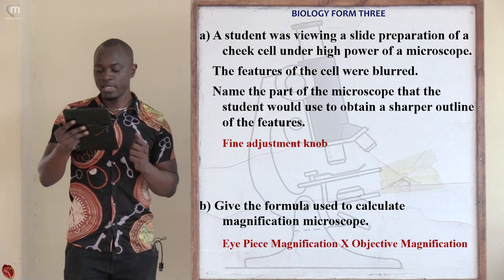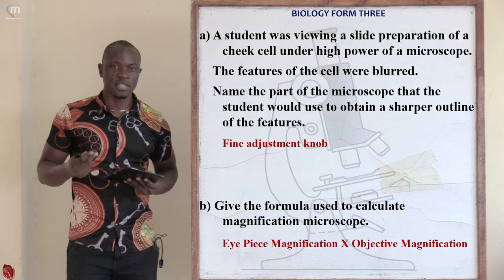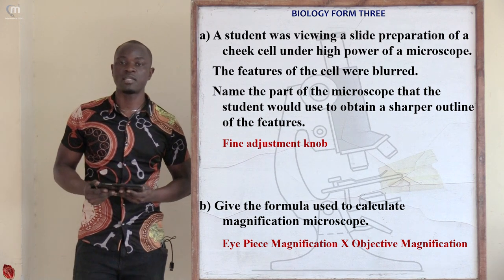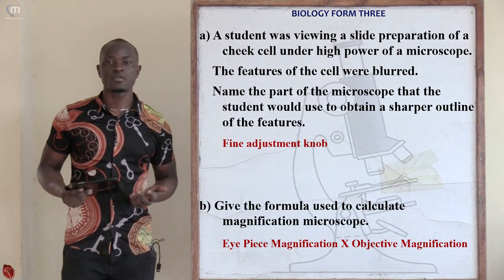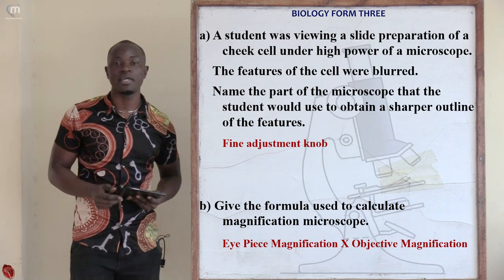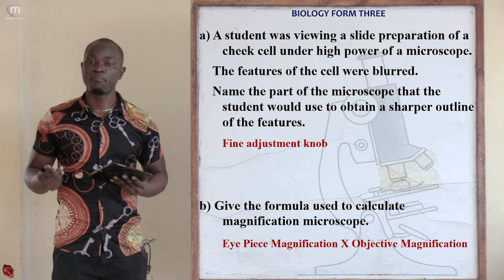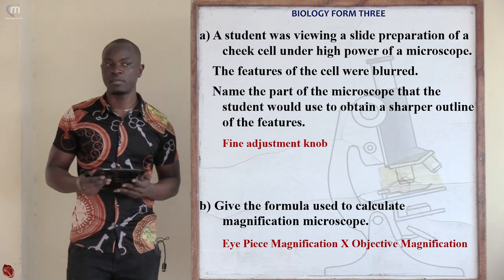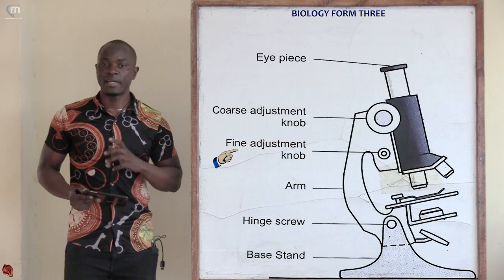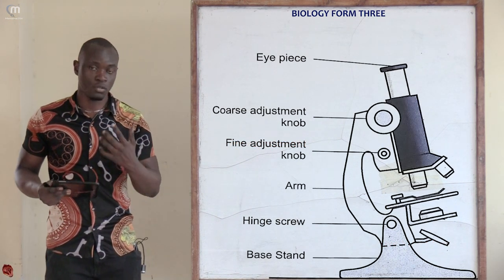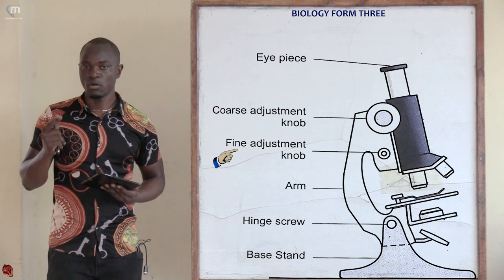Let's go to question number six. A student was viewing a slide preparation of a chick cell under a high power microscope lens. The features of the cell were blurry. The question asks: name the part of the microscope the student should use to obtain a clear outline. The only part of the microscope you can use to obtain a clear and sharper image is the fine adjustment knob.